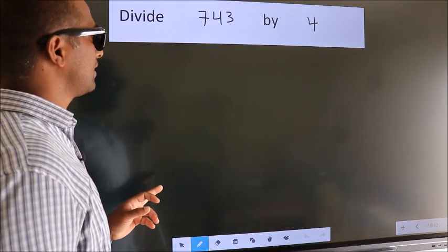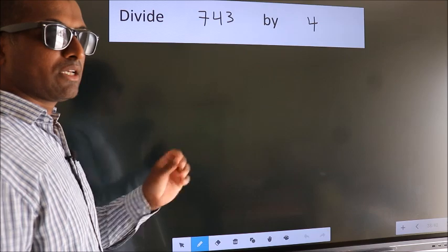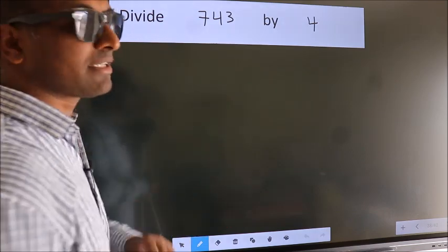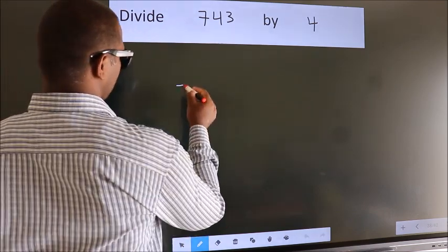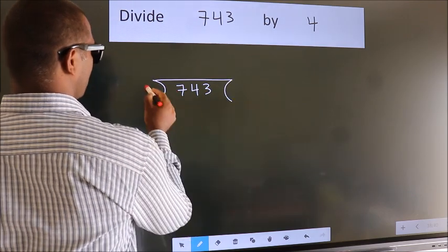Divide 743 by 4. To do this division, we should frame it in this way: 743 here, 4 here.